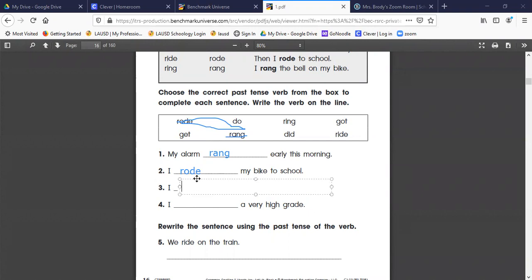And then finally: I blank a very high grade. So not 'get', that's in the present - we're going to say I got, G-O-T. I got a very high grade.